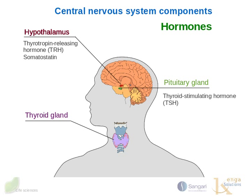The pituitary gland produces thyroid-stimulating hormone, or TSH. It also produces follicle-stimulating hormone, luteinizing hormone, prolactin, and growth hormone. We'll come back to these later.